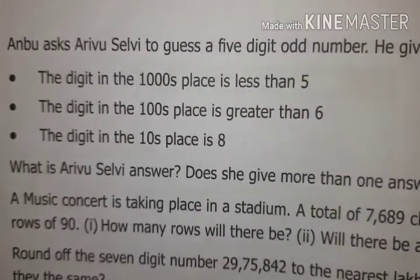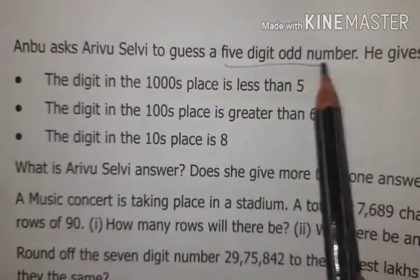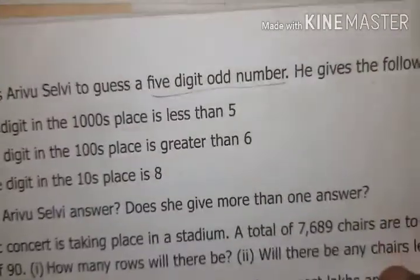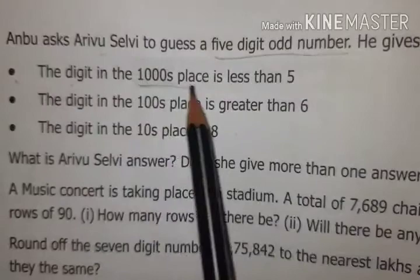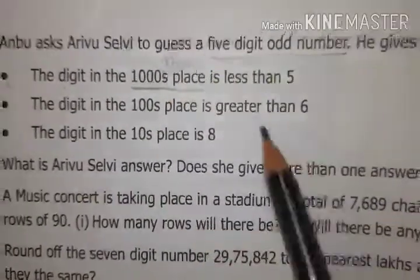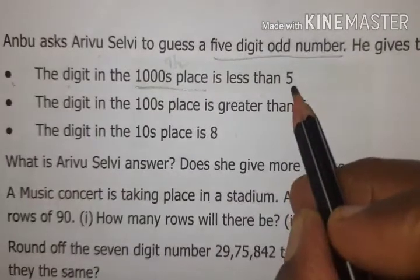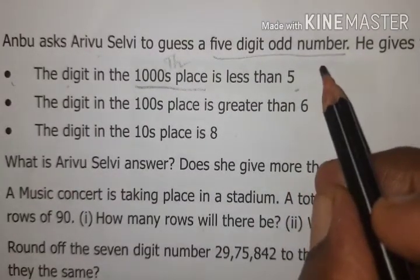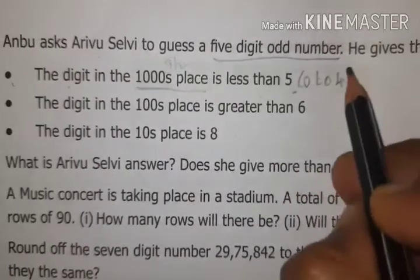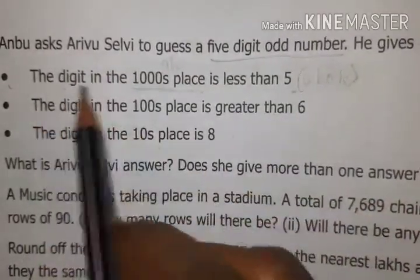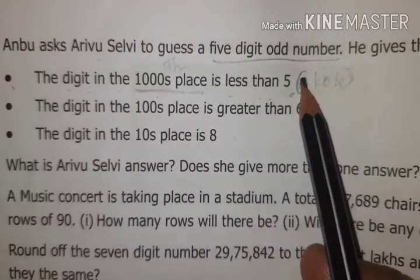Seventh question: Anbu asked Arivasalvi to guess a five-digit odd number. He gives the following hints. First hint: the digit in the thousands place is less than five — so the thousands place value is from zero to four. Second hint: the digit in the hundreds place is greater than six — so it is seven, eight, or nine. Third hint: the digit in the tens place is eight — fixed number.